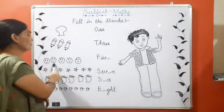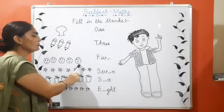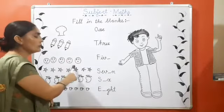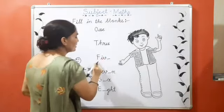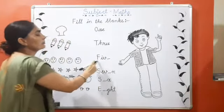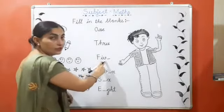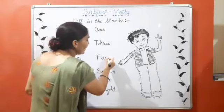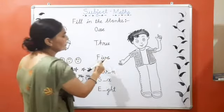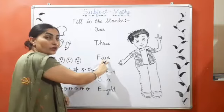One, two, three, four, five. Five smileys are raha, hai na? Five smileys hai. Now think about the spelling of number five. F, I, V, E. Five. So we will write here E.